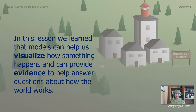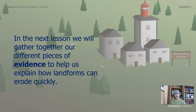In this lesson, we learned that models can help us visualize how something happens and can provide evidence to help answer questions about how the real world works. In the next lesson, we will gather together our different pieces of evidence to help us explain how landforms can erode quickly. I will see you for part three of this lesson. Bye for now.